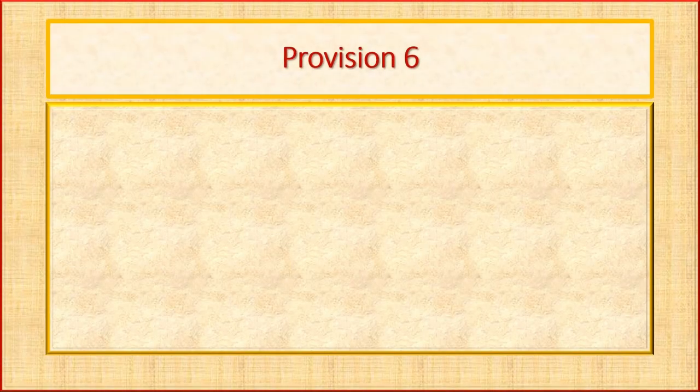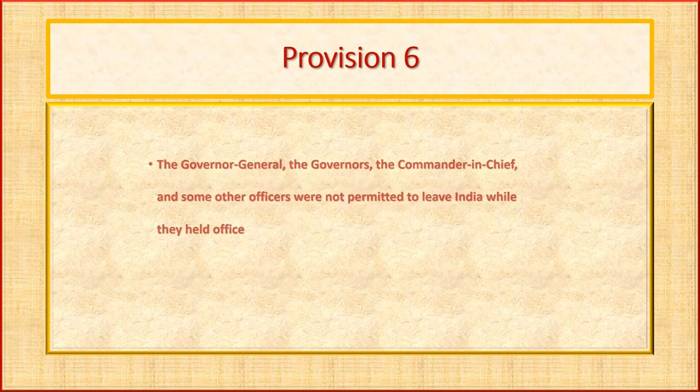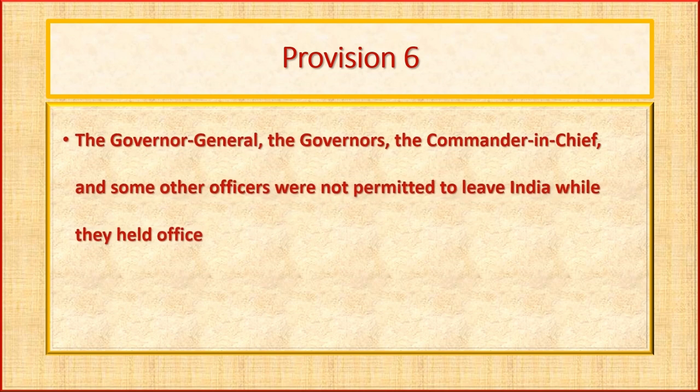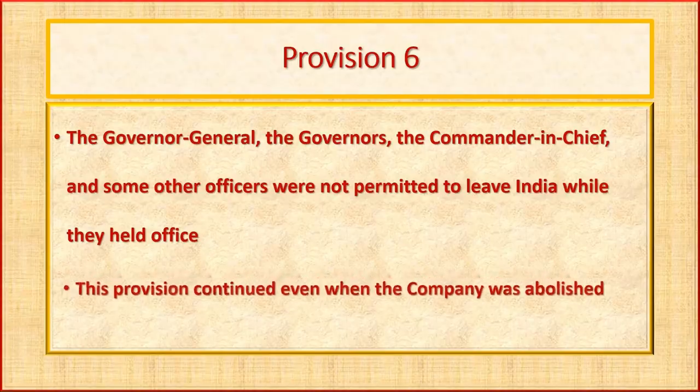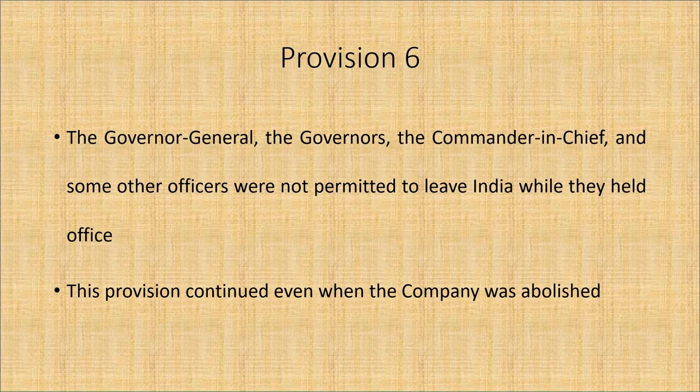It was as per Provision 6 that the governor general, the governors, the commander-in-chief, and some other officers were not permitted to leave India while they held office. This provision continued even when the company was abolished.